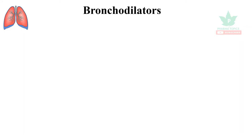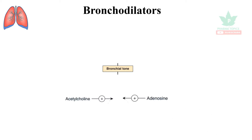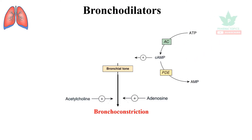Welcome to our pharma topics channel. Our topic of discussion is bronchodilators. The bronchial tone is influenced by several neurotransmitters and inflammatory mediators. In asthma and COPD, acetylcholine and adenosine can cause bronchoconstriction. There is also a pathway through cyclic AMP which can cause bronchorelaxation.